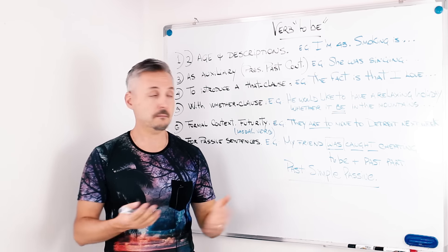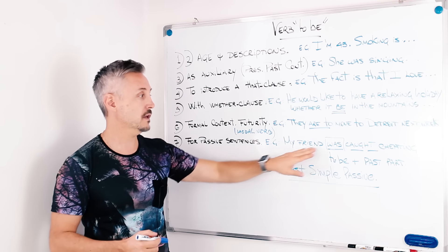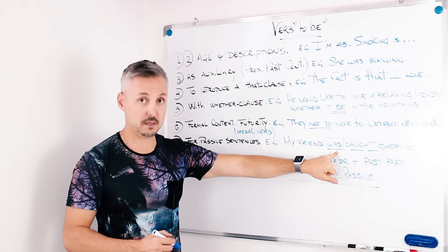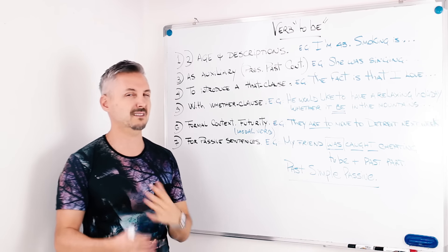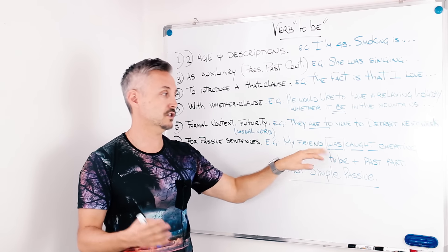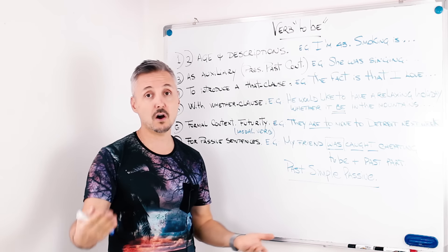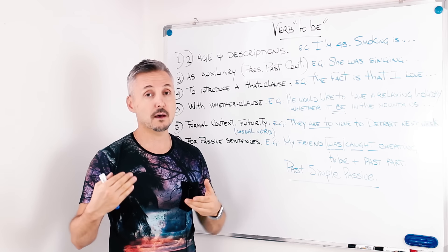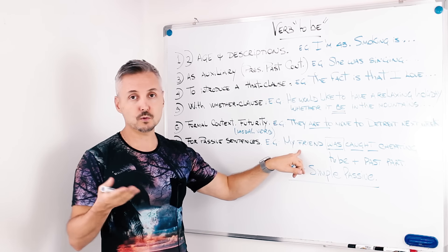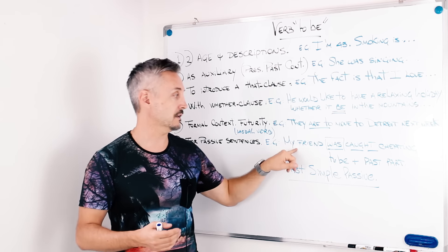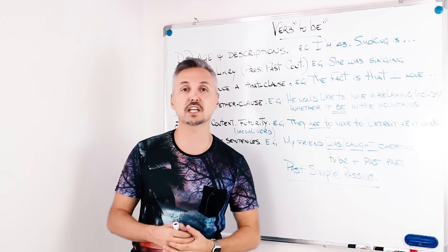If we wanted to say it in the present simple passive, this would be, yes, my friend is caught. Okay? But it doesn't sound right. It's just, this one is better, or has been caught for the present perfect passive. So, I chose to use the past simple passive. My friend was caught cheating last week.